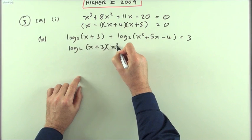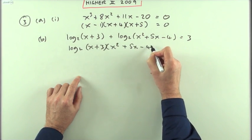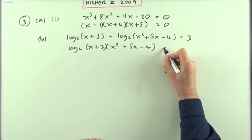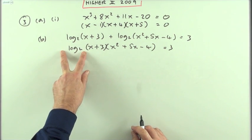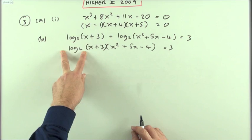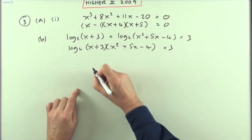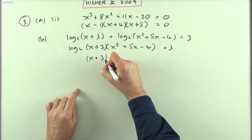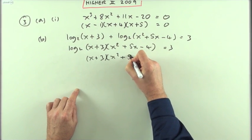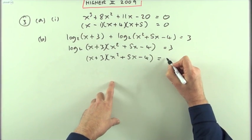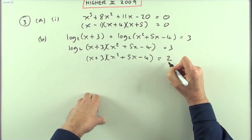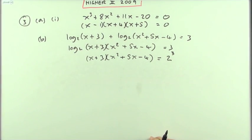log₂((x + 3)(x² + 5x - 4)) = 3, and then you can start removing parts you don't want. The inverse of log base 2 is exponential base 2. So (x + 3)(x² + 5x - 4) would be taking this over as its inverse exponential base 2, so 2 lifts the 3 up as its power.